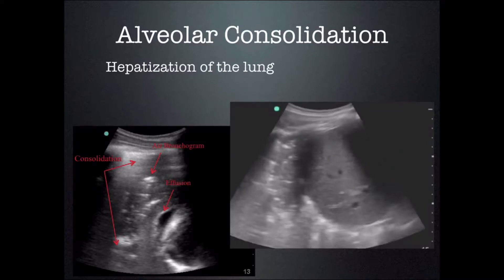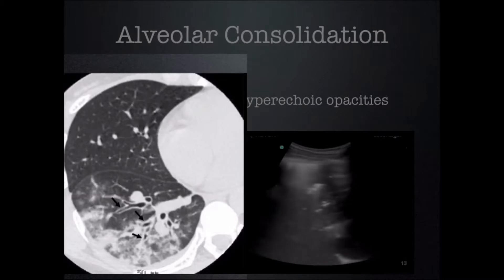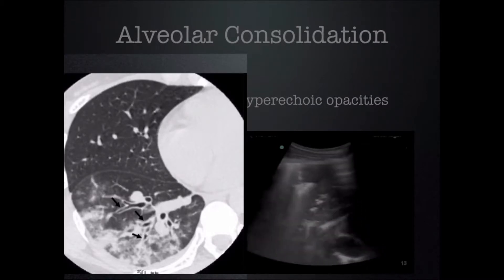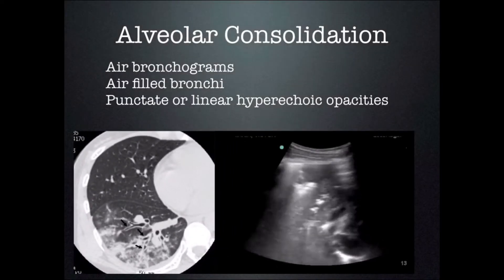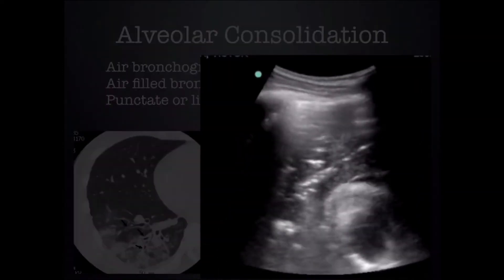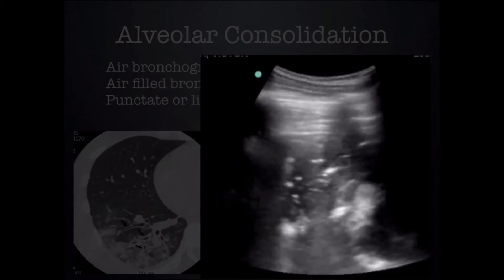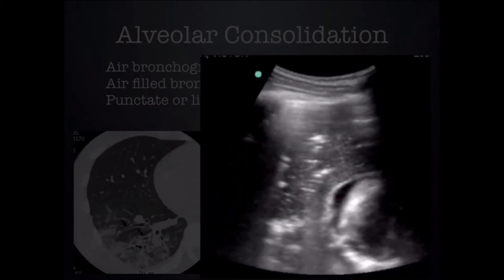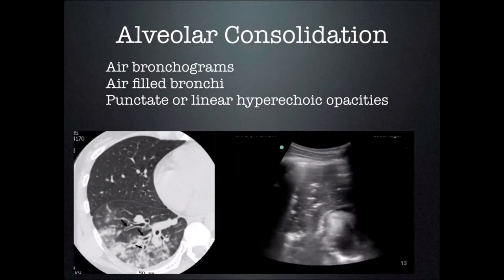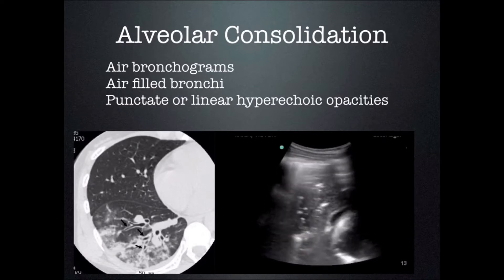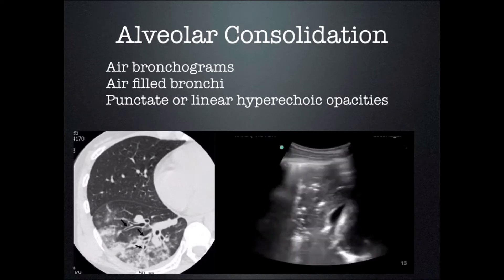We can see punctate linear hyperechoic areas within the lung — these are air-filled spaces that remain within lung that has been filled with fluid or pus. This is called hepatization of the lung. On CT, air appears black and still remains in the bronchioles even though the lung has been infiltrated. On ultrasound, these air-filled spaces are hyperechoic because air is always bright and causes a dirty shadow — a reverberation artifact from this air-pus interface that signals abnormal lung. In this case this is a pneumonia.